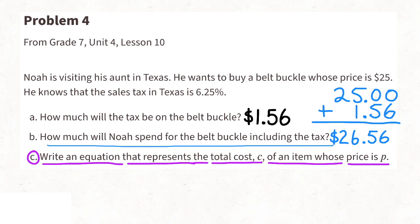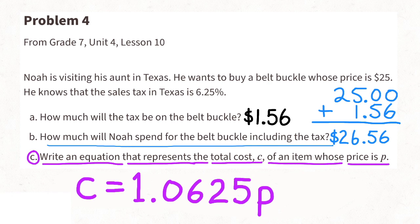Part c: write an equation representing the total cost c of an item whose price is p. C equals 1.0625 times p. The 1 represents one times the price p, and the 0.0625 represents the tax rate times the price. I hope this helps — thanks for watching! If you haven't already subscribed, please subscribe. See you next time!